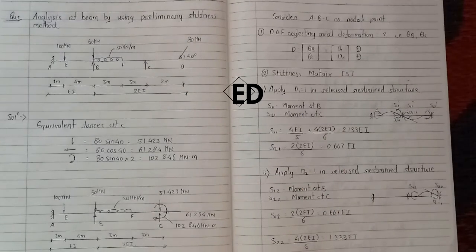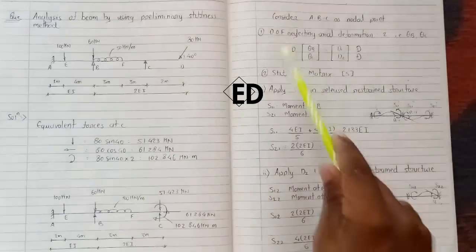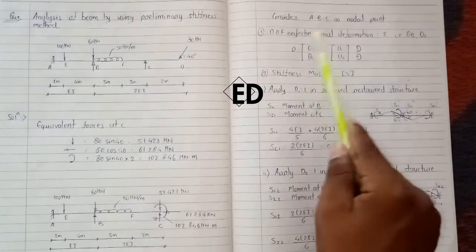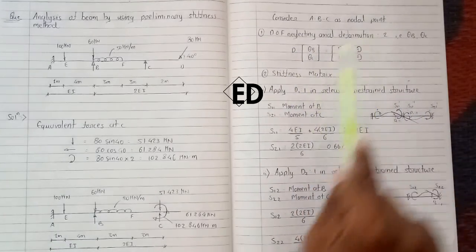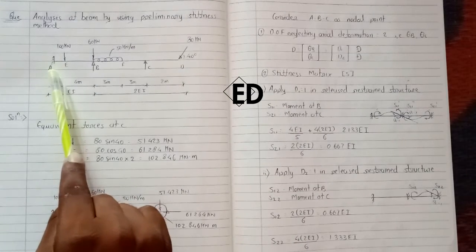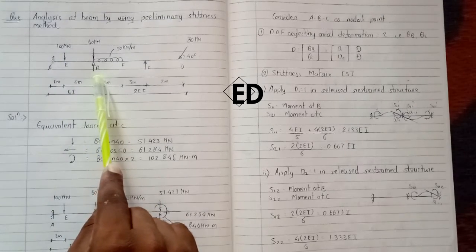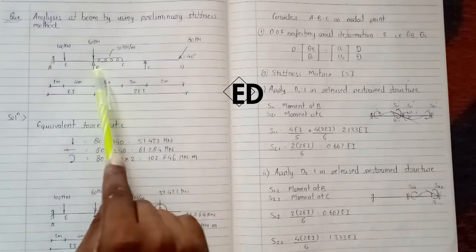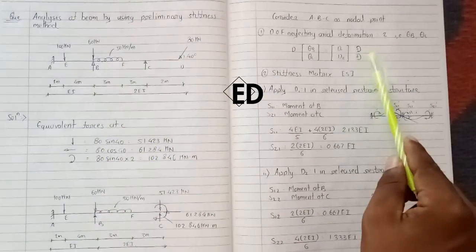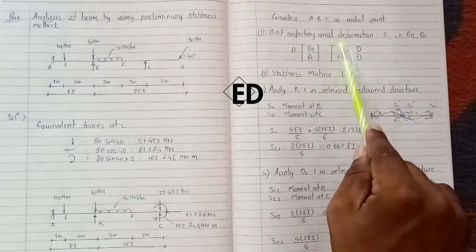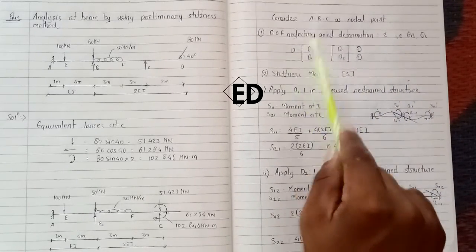Our first step is to calculate the degree of freedom, neglecting axial deformation. The deflection at A — that is θ_A — is zero because A is a fixed support. Therefore, θ_B and θ_C are the degrees of freedom. So in this question there are only two degrees of freedom, neglecting axial deformation.